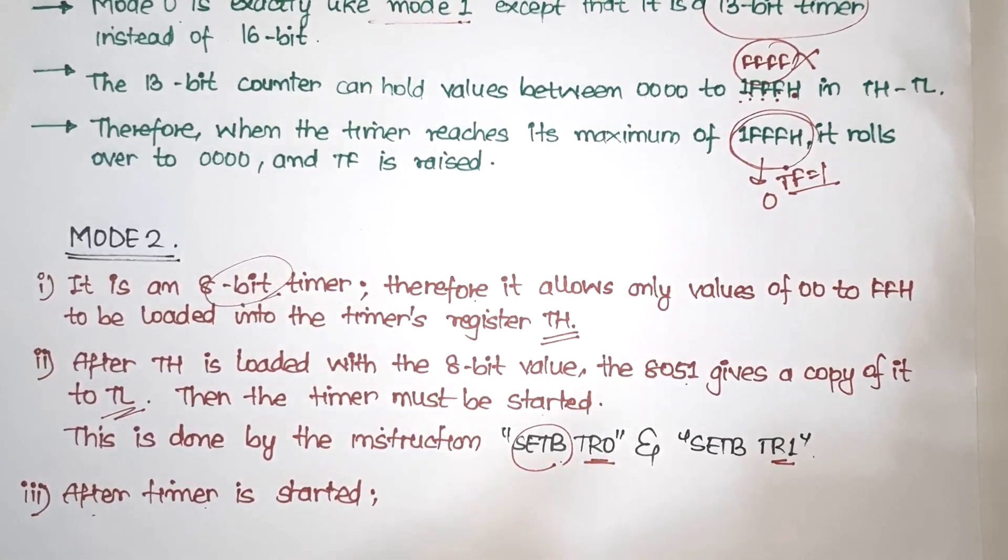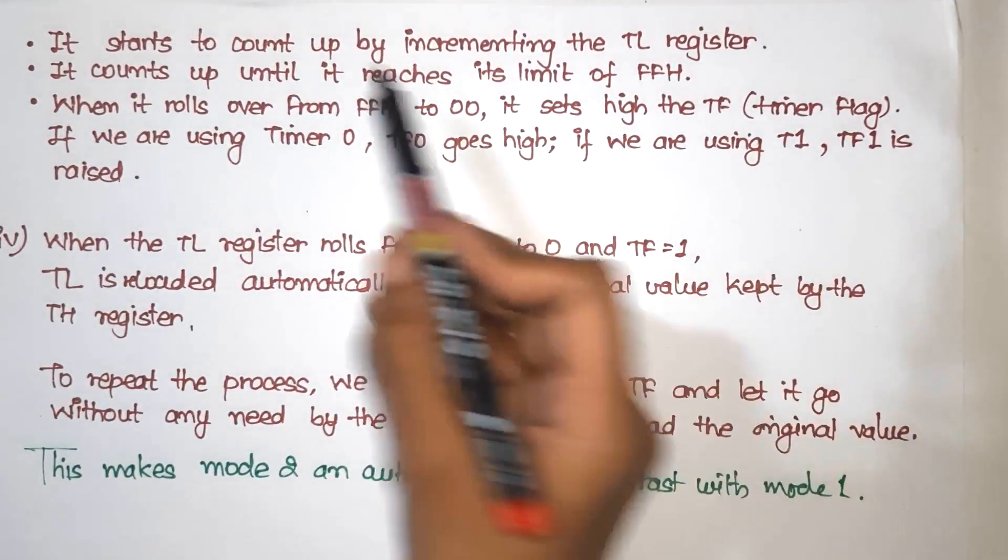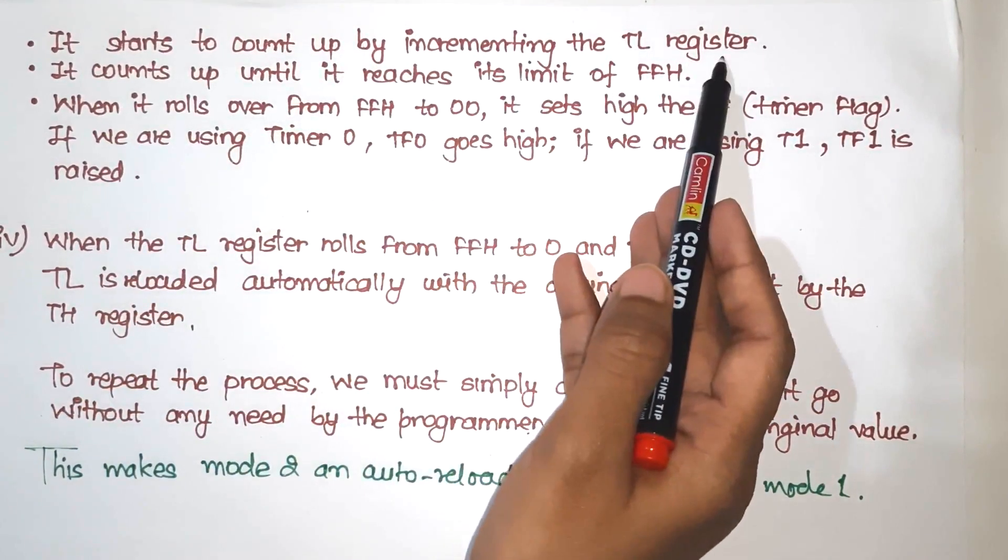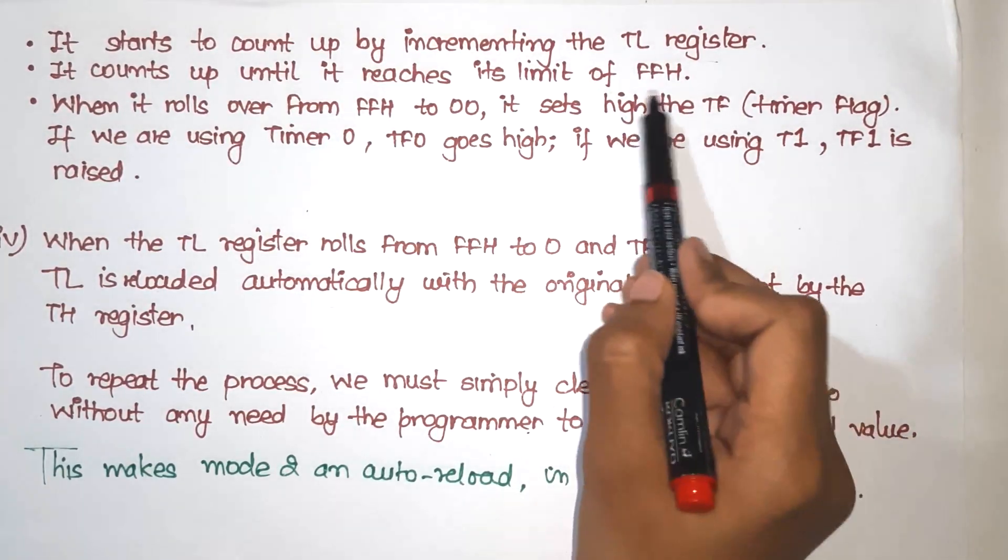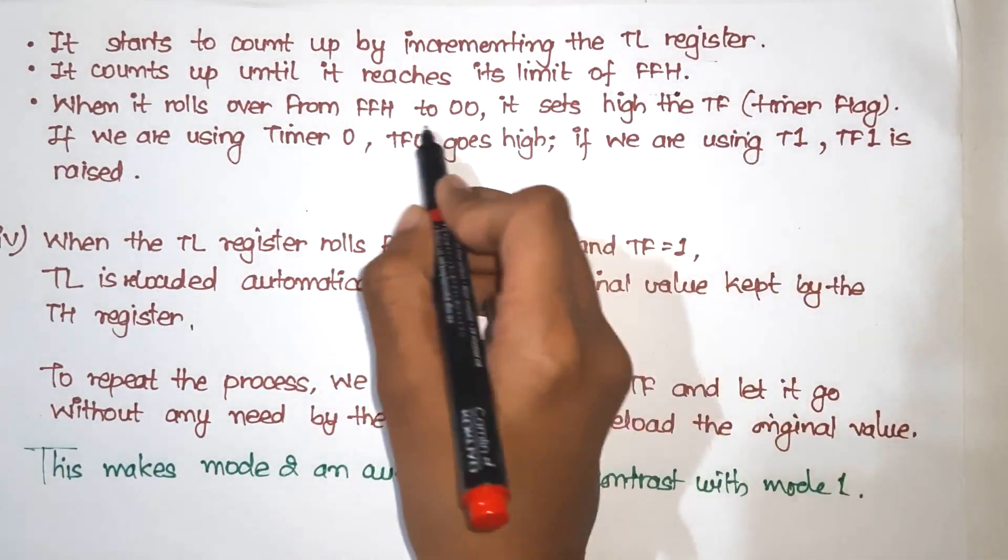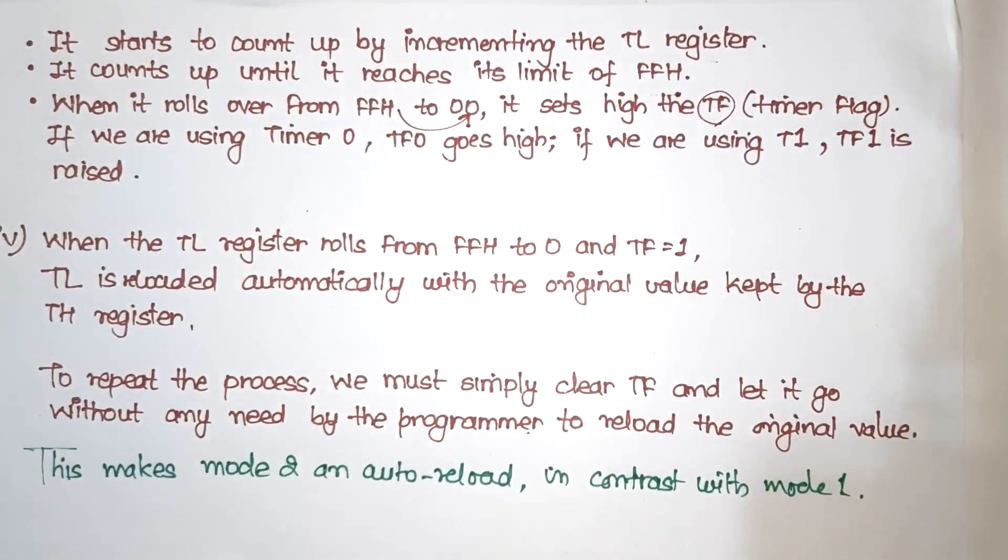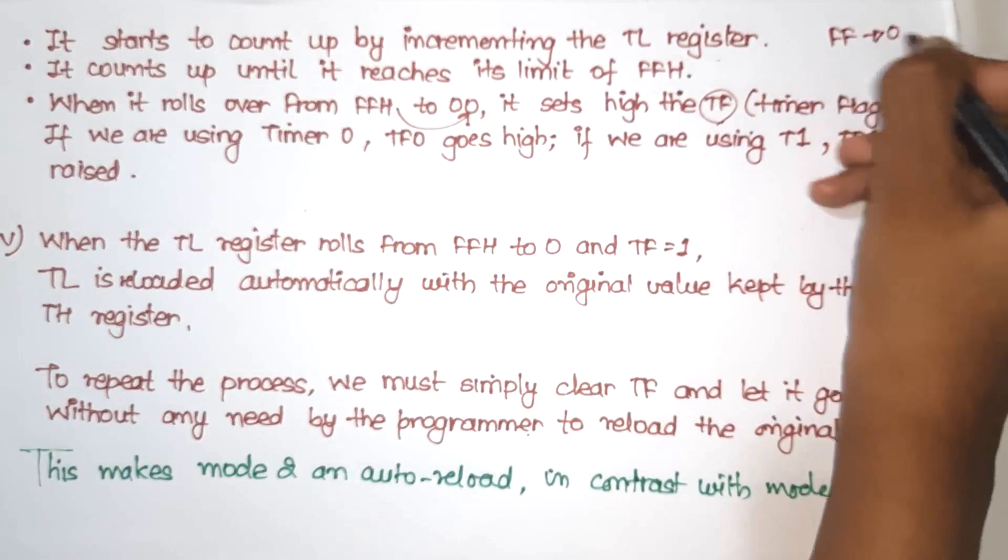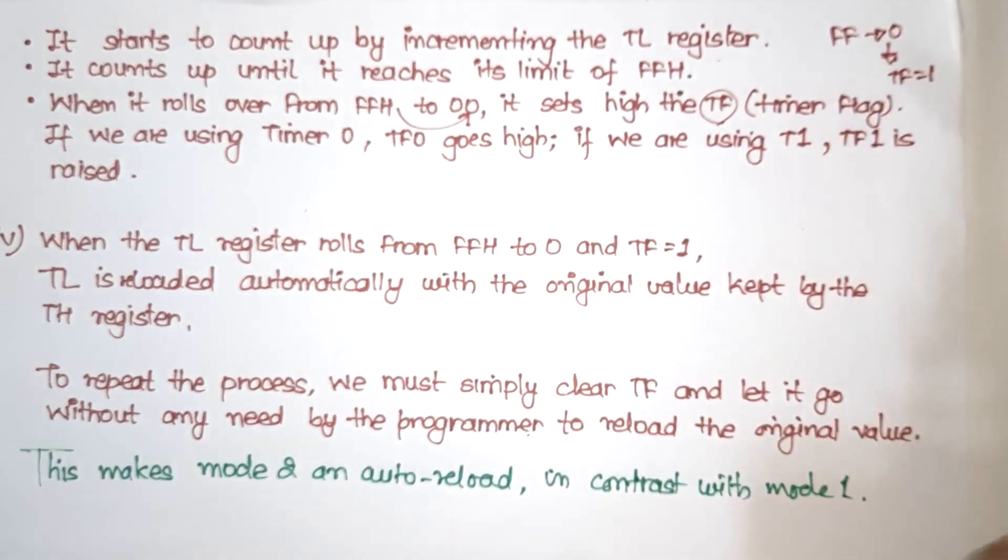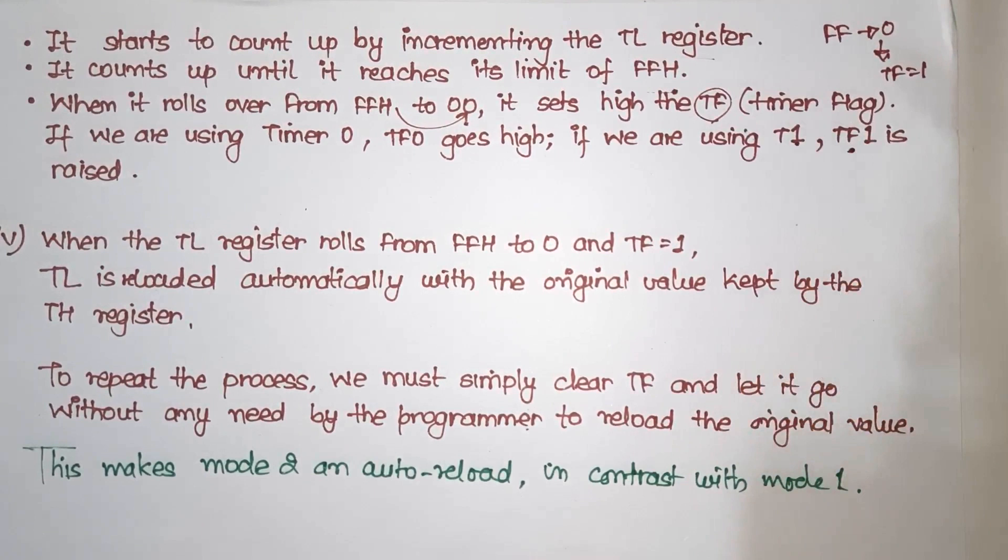After timer is started, then it starts counting up. Then it will increment the value. So it starts to count up by incrementing the TL register. So TL register, the copy of the register, will increase and increment until it reaches FFH. If it reaches FFH, then it will again roll back. From FFH it will go to 00. Then TF1 will be raised. It will be the same overflow process. This is the difference: it is 8-bit. So once it reaches FFH, after that it will roll over. So our TF flag will raise. TF will be now equal to 1. So if we use timer 1, then TF1, otherwise TF0.